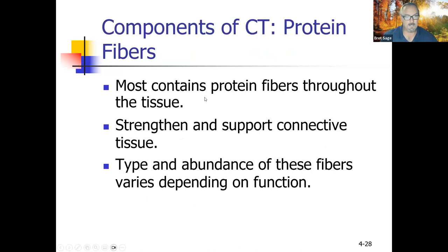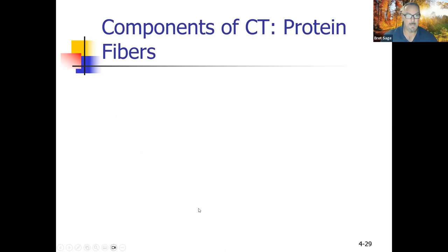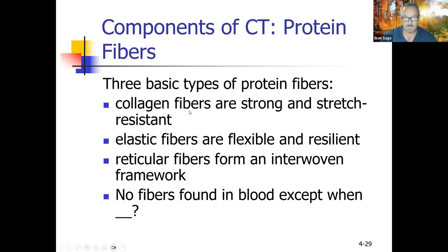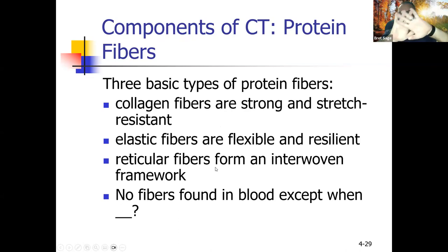Most connective tissue contains protein fibers throughout, which strengthen and support it. The type and abundance of fibers varies with function. There are three basic types: collagen fibers, which are strong and stretch-resistant — collagen in our skin diminishes as we age. Elastic fibers are flexible and resilient — they stretch and snap back. Reticular fibers form an interwoven framework — like a net of protein fibers woven together so that when someone pulls our cheek, it doesn't yank the skin off.